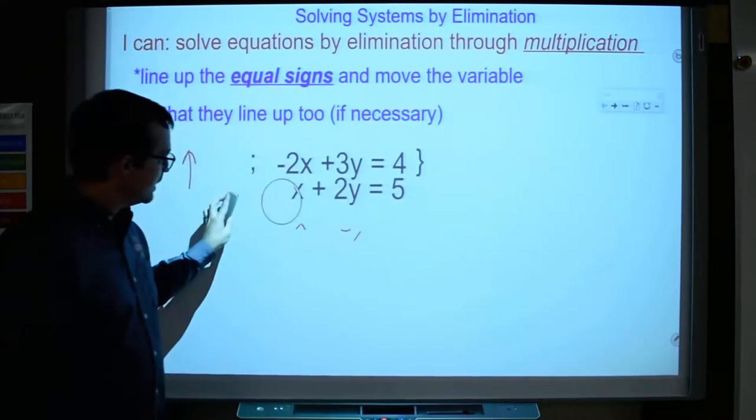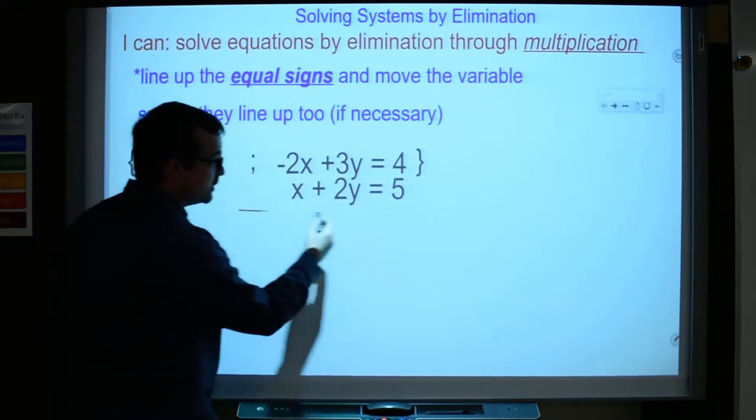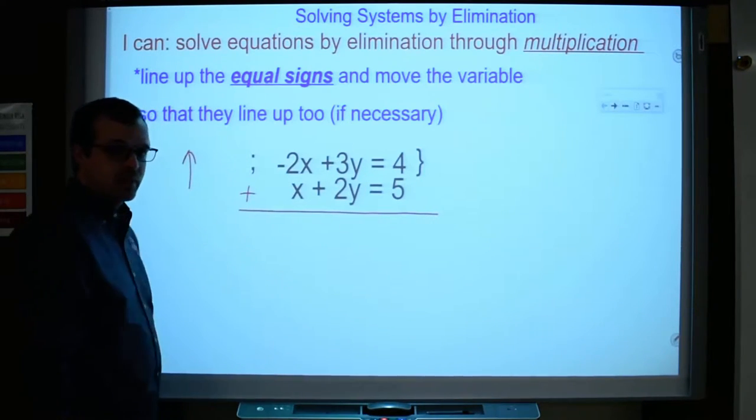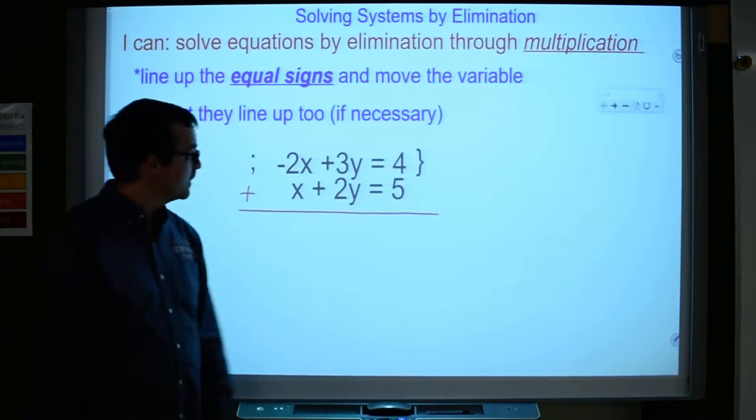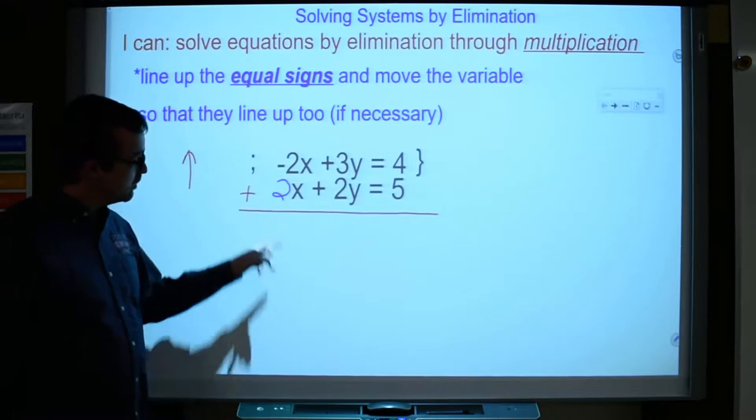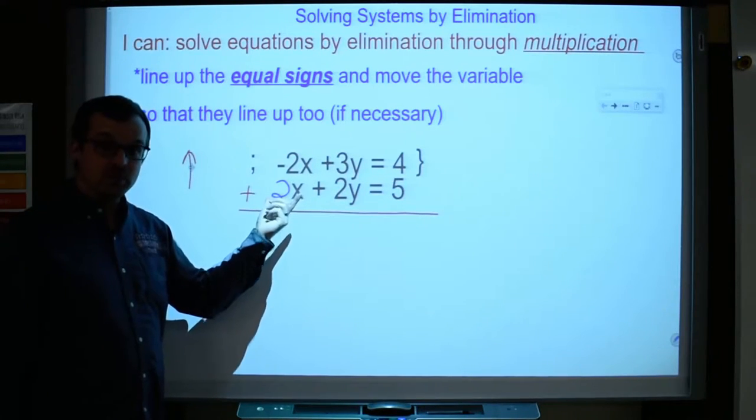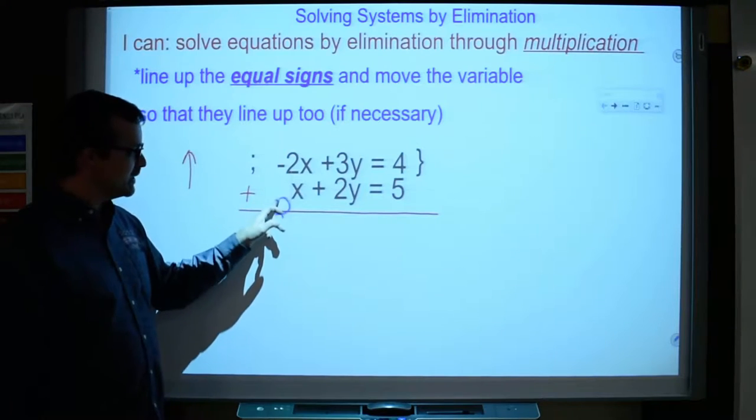So I start thinking, okay, what would I have to do to one or both of these equations so that when I do add them up, that they would eliminate? So I just start thinking outside the box here. Well, let me think. If this was a 2 right here in front of the x, would my x's eliminate? Negative 2x plus 2x would be 0, right? So that would eliminate, but I can't just put a 2 there. That's not fair, and that's not equal to all the terms or both sides of the equation.